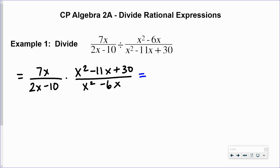So the first rational expression 7x, we're going to leave that alone. 2x minus 10 looks like there is a GCF of 2. So 2x divided by 2 is x, negative 10 divided by 2 is 5.